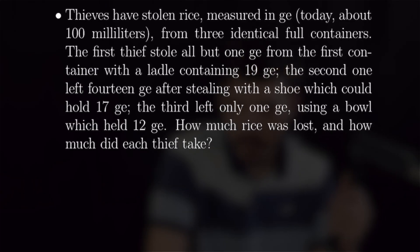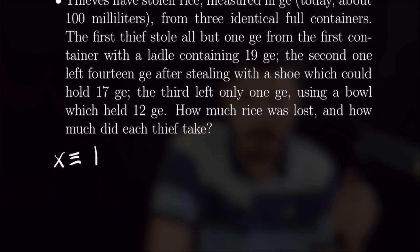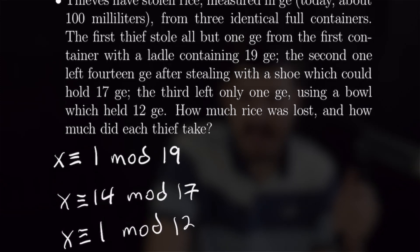Now I'm going to do the same thing for this second word problem. We have thieves that have stolen rice, and we're going to be able to set up three linear congruences from this problem. I'm not going to read the whole thing, but the three equations we're going to be able to set up are x is congruent to one mod 19, four mod 17, and one mod 12. And you can solve that one as well for homework and post in the comments what you got.